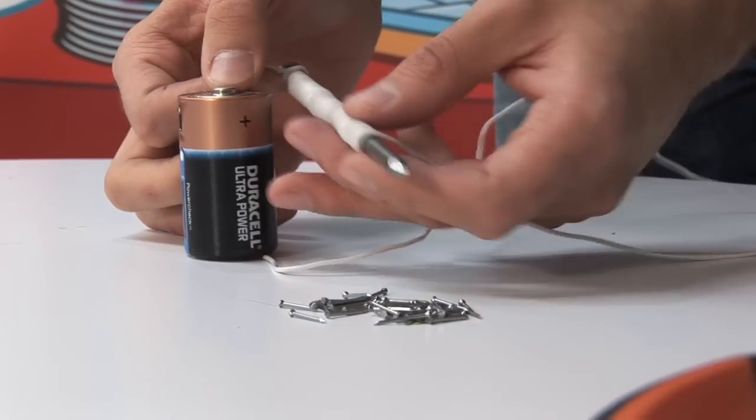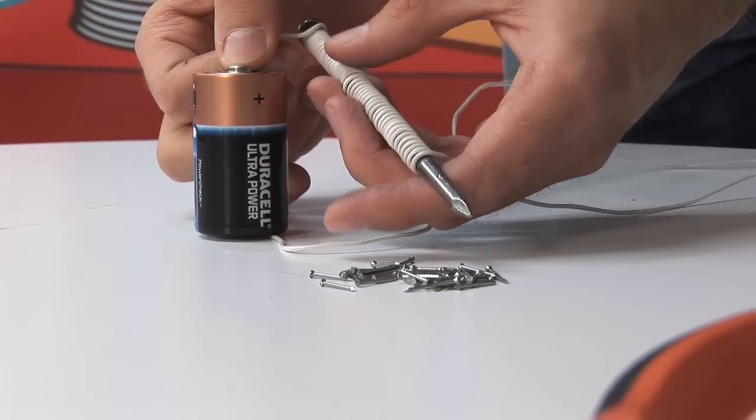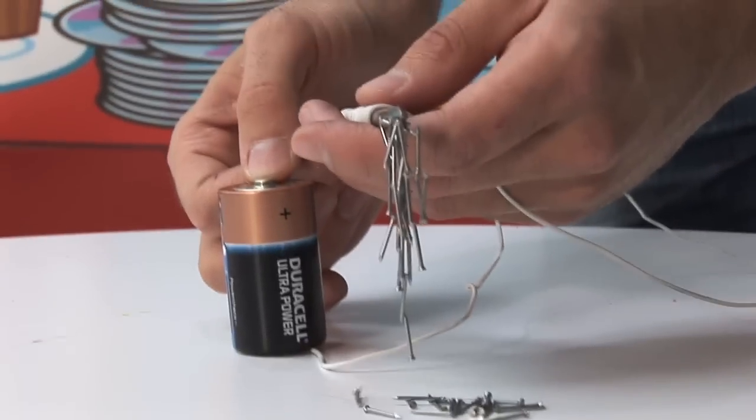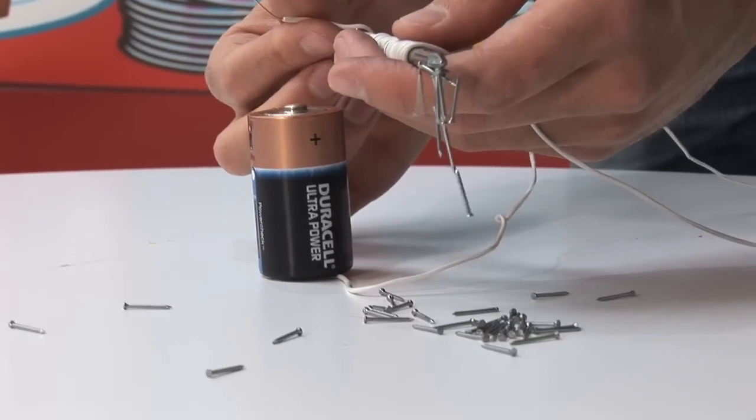At this point I now have an electrical current flowing through here which is producing a magnetic field around the nail. When I dip it, it can now pick up the nails. I let go and I'll drop them.